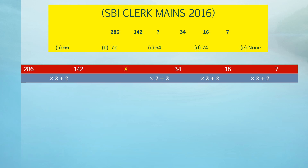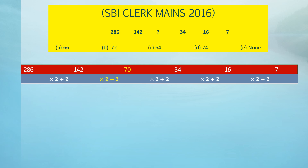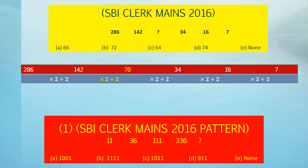Let us verify: 16 × 2 + 2 = 34 — yes, it follows the rule. And 142 × 2 + 2 = 286 — yes, it also follows the rule. So the relation between 34 and x is also ×2 +2: 34 × 2 + 2 = 70. Therefore, x = 70. We can verify: 70 × 2 + 2 = 142 — correct. Based on this pattern, pause the video and try the practice question.